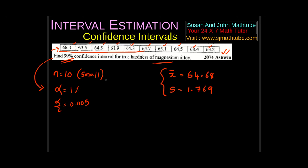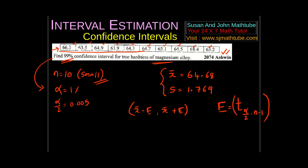Since the sample is small, we use the t distribution. The interval is (x̄ − E, x̄ + E), where E = t_{α/2, n−1} × s/√n = t_{0.005, 9} × 1.769/√10. From the t tables, the significance level is 0.005 with 9 degrees of freedom.